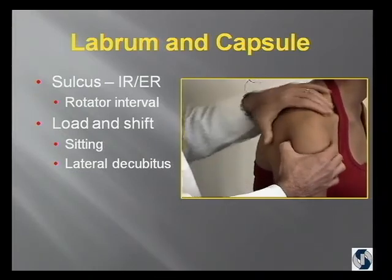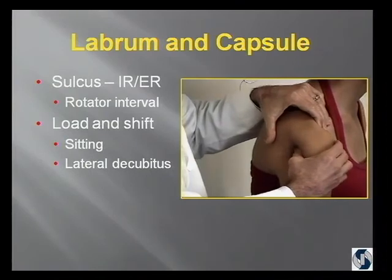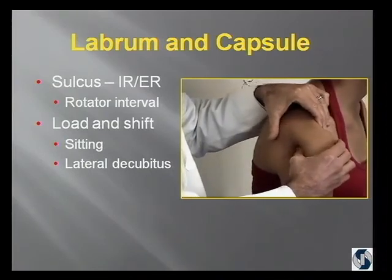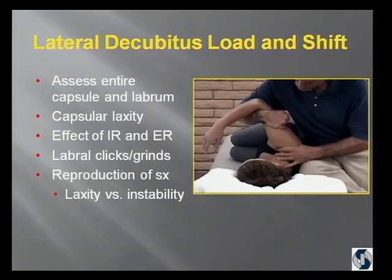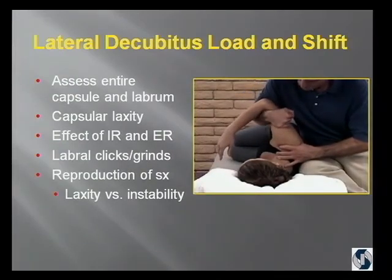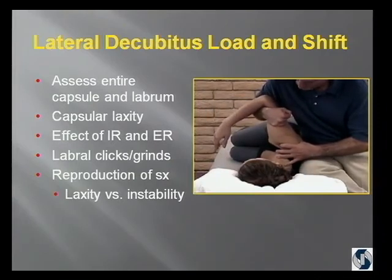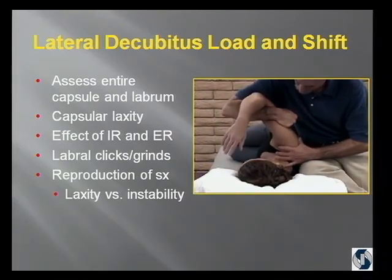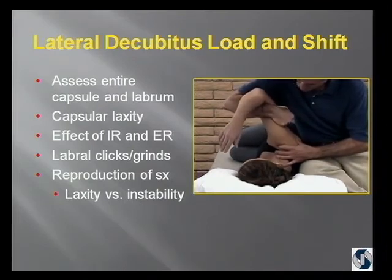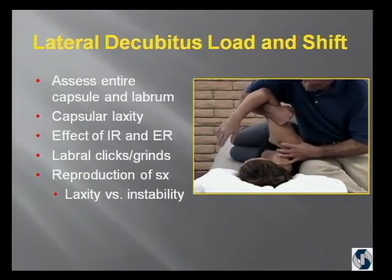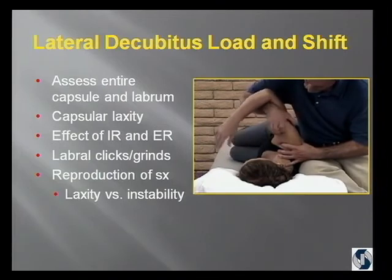I'll do load and shift in the seated position — this is the asymptomatic side on this gymnast. Then I'll do them in the lateral decubitus position, looking to get a feel for what the capsule is like and whether there are labral clicks or grinds. What's the effect of internal and external rotation? What gets tight? And I'm trying to determine whether the patient is lax or unstable.